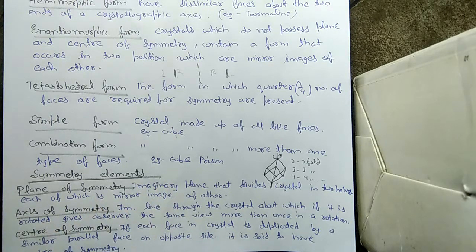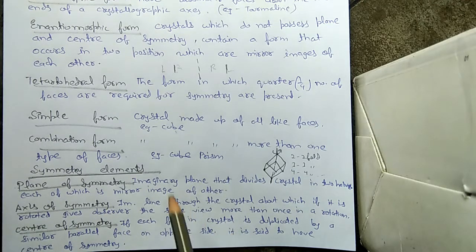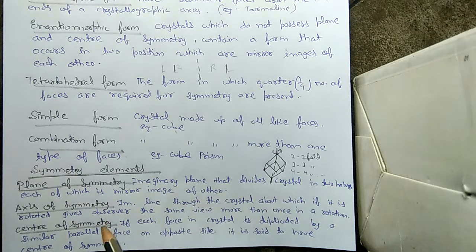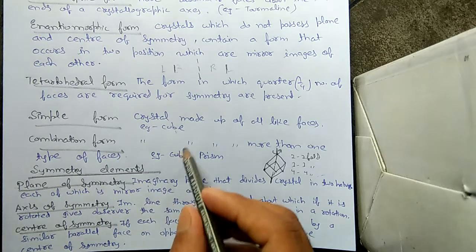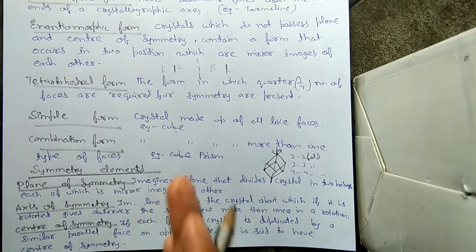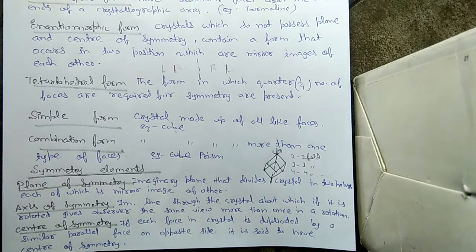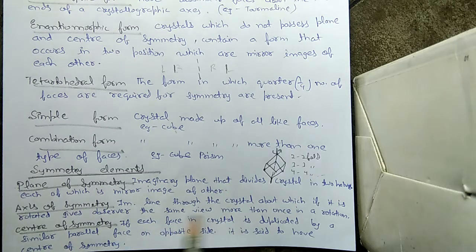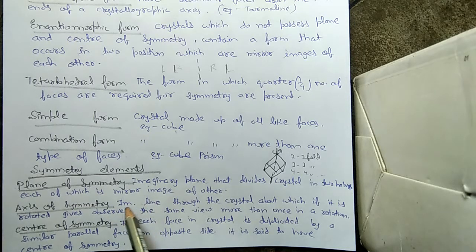Now we will discuss the symmetry elements. There are three symmetry elements: plane of symmetry, axis of symmetry, and center of symmetry. The plane of symmetry is an imaginary plane that divides a crystal into two halves, each of which is a mirror image of the other. Suppose I make a cube and cut it from between — the plane that cuts it into two halves is the plane of symmetry.